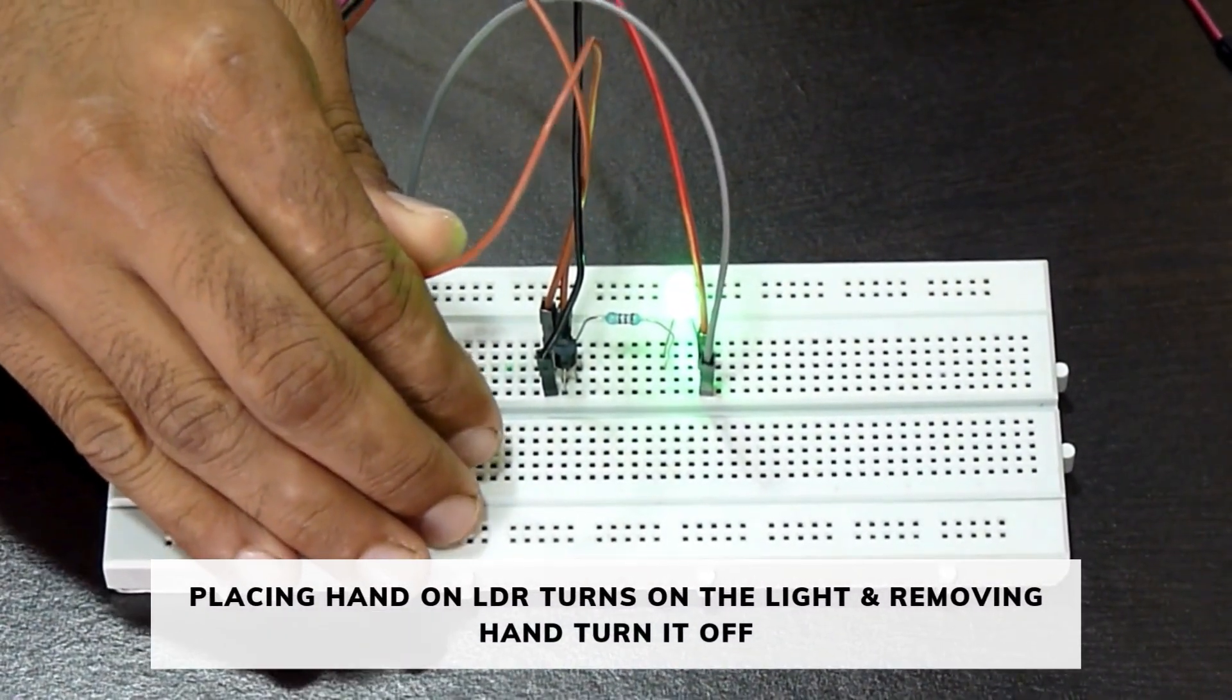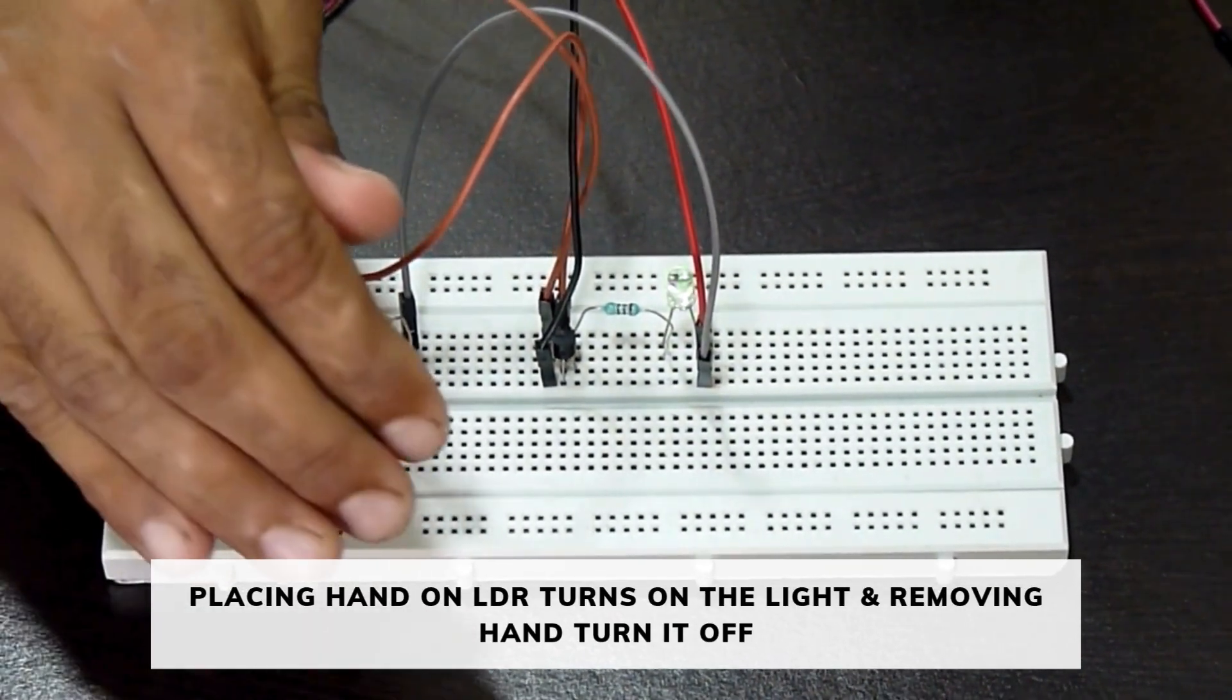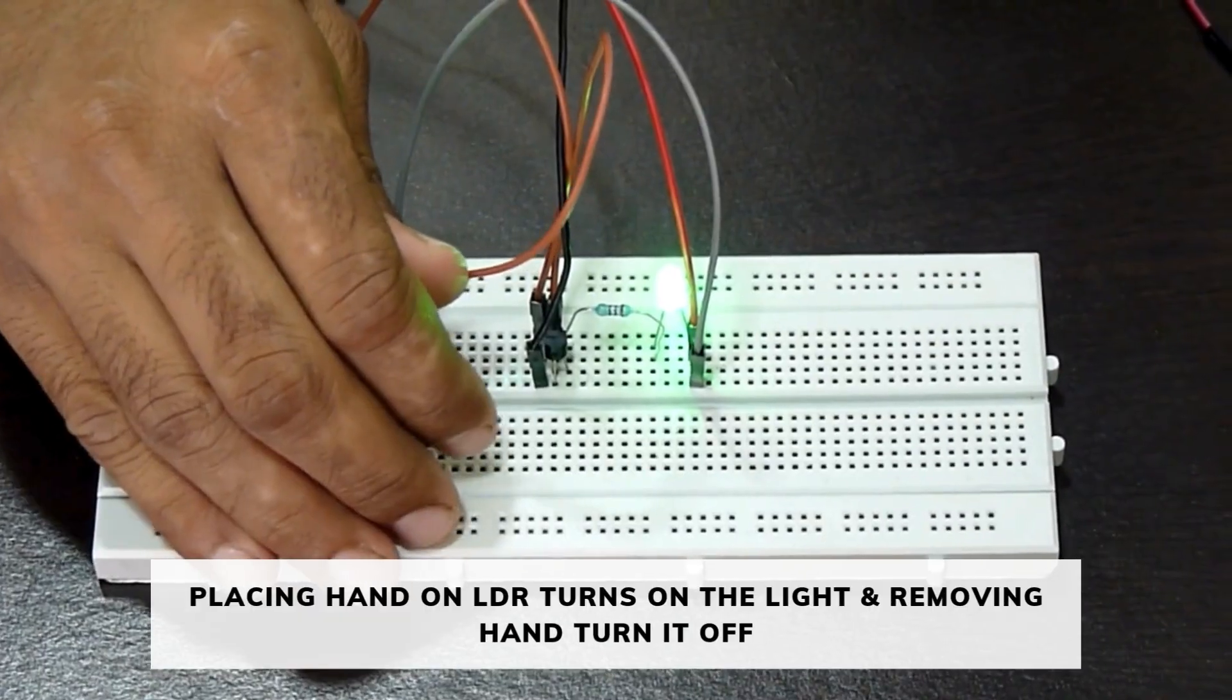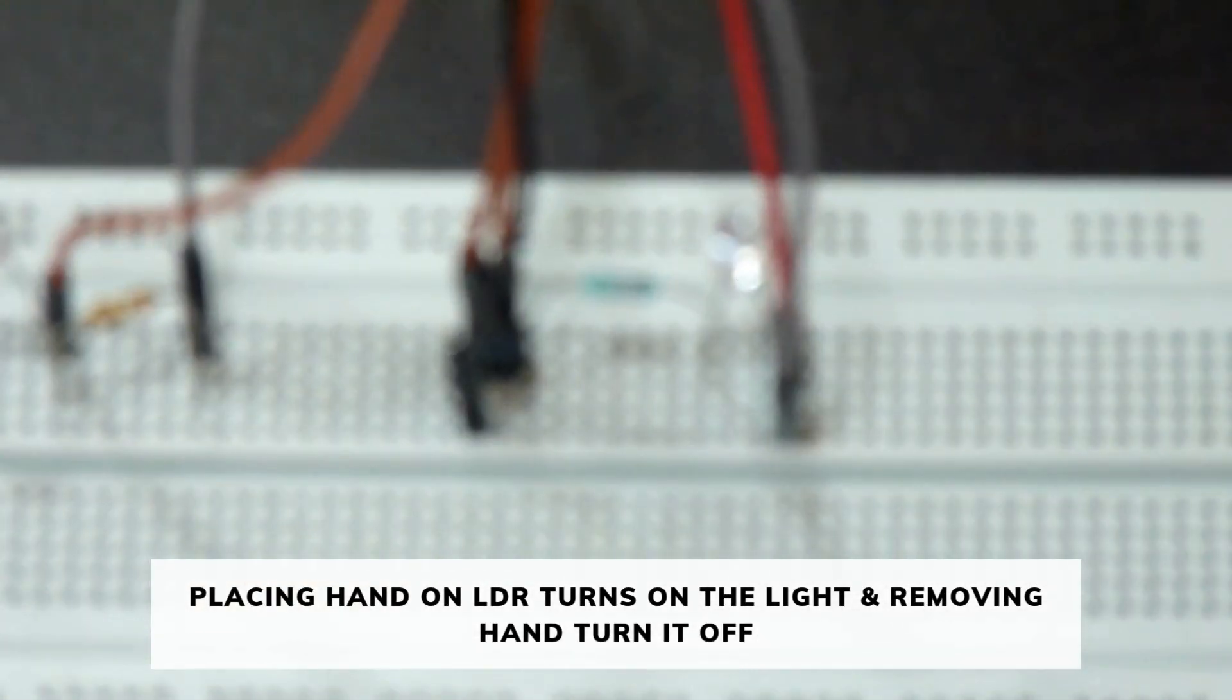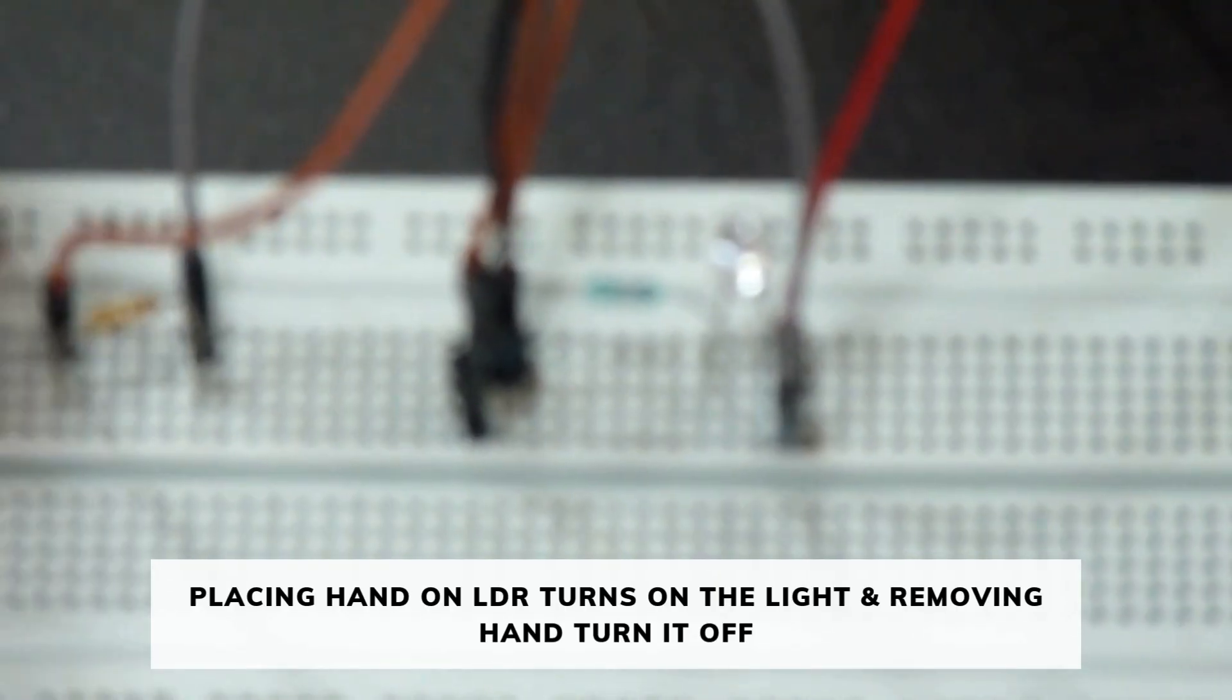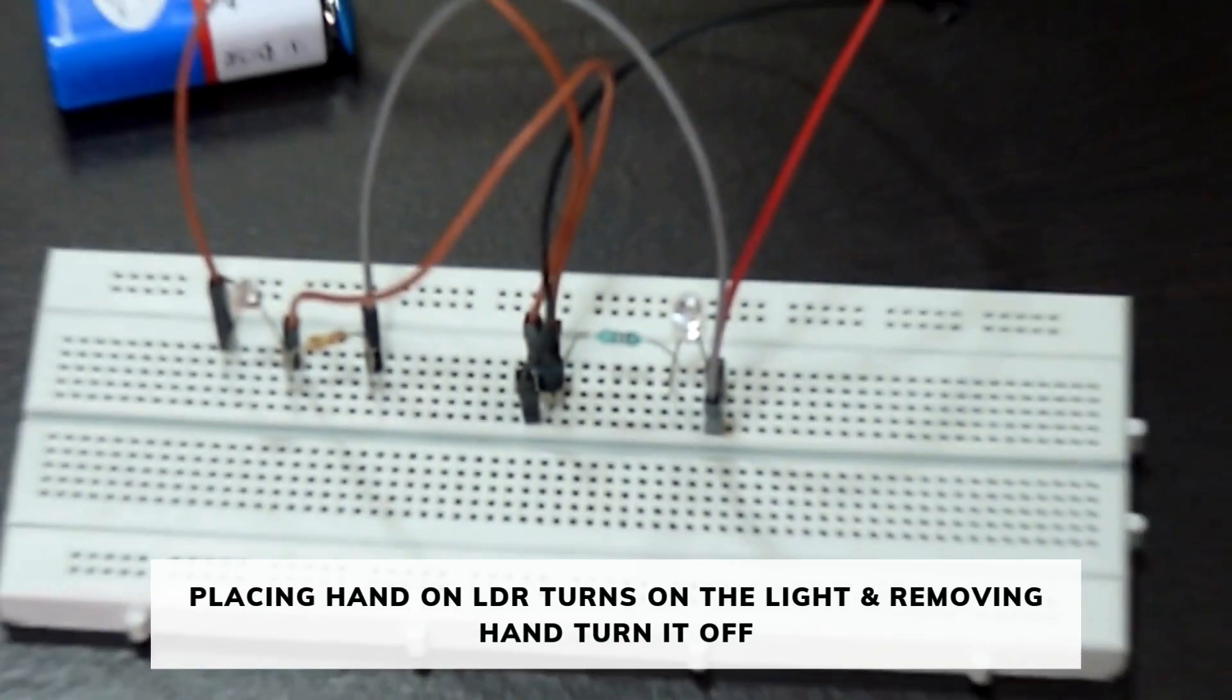As you can see, when we put a hand over the LDR, the LED turns on. When we remove the hand over the LDR, the LED turns off.